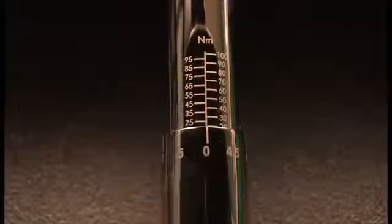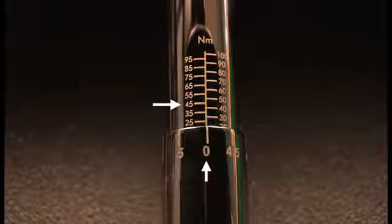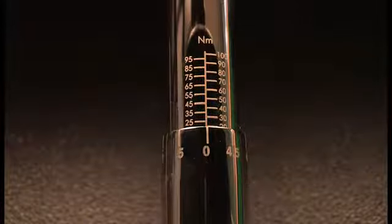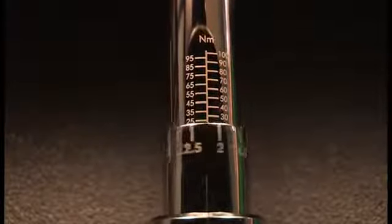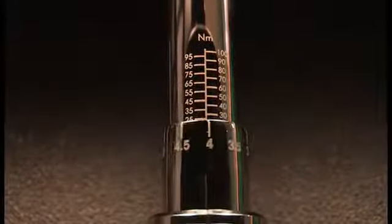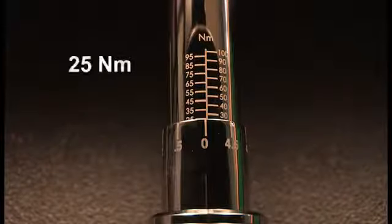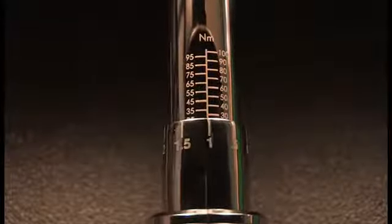Many click-type torque wrenches have scale markings on the barrel and on the sleeve, similar to a micrometer. This wrench has barrel marks every 5 newton meters. The sleeve is marked every 1.5 newton meters. To set a value of 28 newton meters, release the lock ring and turn the sleeve to the 25 mark. The zero on the sleeve will line up with the barrel center line, and the 25 mark will just be visible. Now, rotate the sleeve until the 3 mark lines up with the center line.